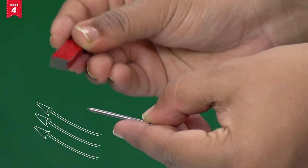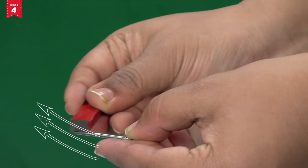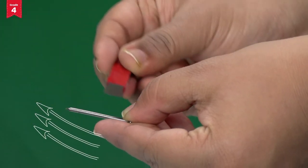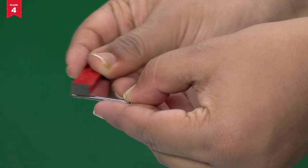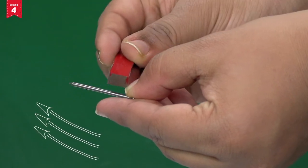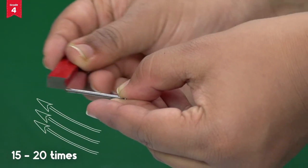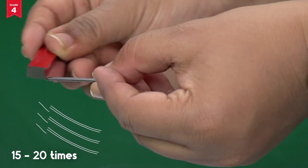Remember that you have to rub in the same direction every time so as to make a strong magnetic field. Lift the magnet again and again and rub the same end across the nail. Repeat this about 15 to 20 times.